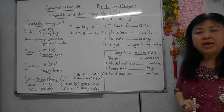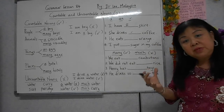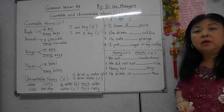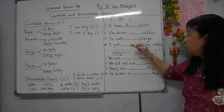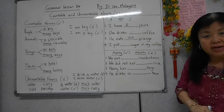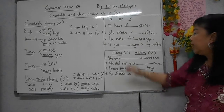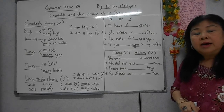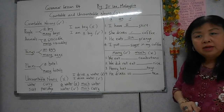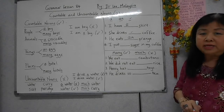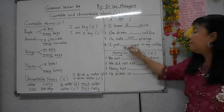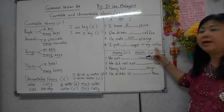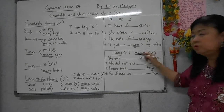Contoh, 'I drink water' - bukan 'I drink a water', salah. 'I have a skirt' - skirt boleh kira, bermula dengan huruf S, oleh itu 'a skirt'. 'She drinks coffee' - coffee tak boleh kira, jadi tidak tulis 'a' atau 'an', hanya 'she drinks coffee'. 'An orange' - orange bermula dengan O, kita mesti tulis 'an'. 'I put sugar in my coffee' - sugar tidak boleh kira, jadi biar sahaja, tiada 'a' atau 'an'.